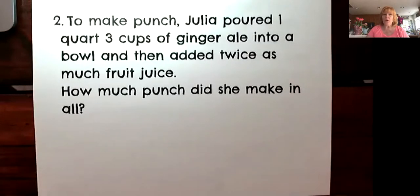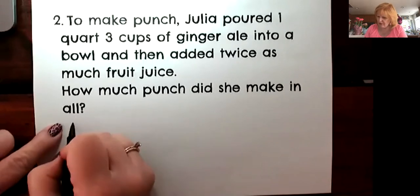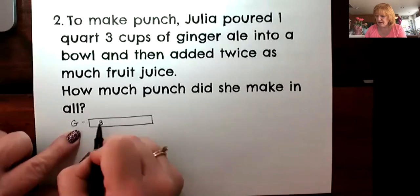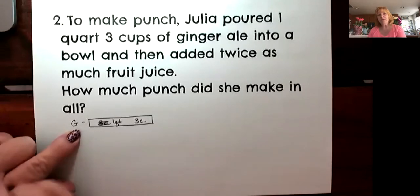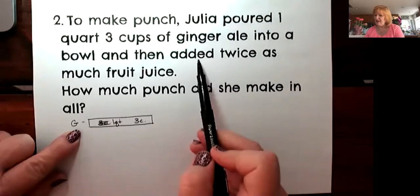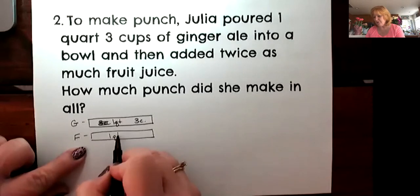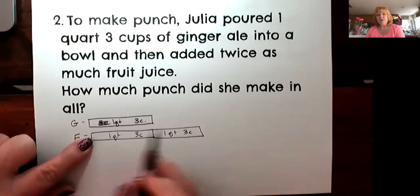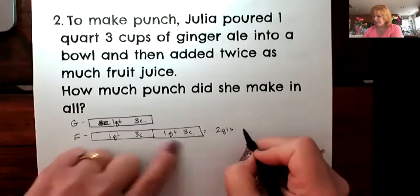Let's look at our next one. To make punch, Julia poured one quart and three cups of ginger ale into a bowl and then added twice as much fruit juice. How much punch did she make in all? The ginger ale — I'll put a G — is one quart and three cups. Then she added twice as much fruit juice, so that's also one quart and three cups more. Adding them together: one quart plus one quart and three cups plus three cups gives me two quarts and six cups.